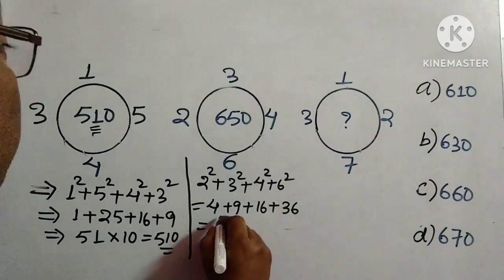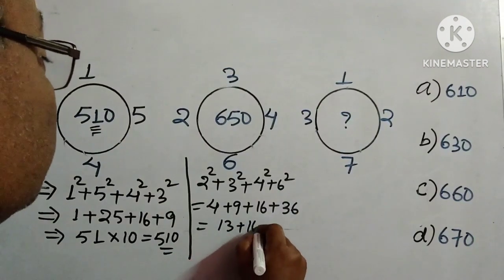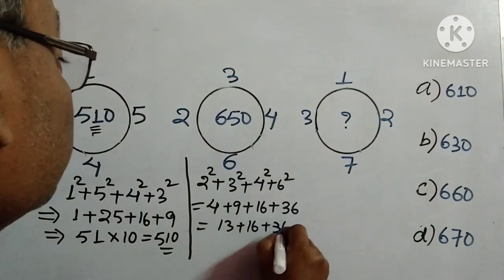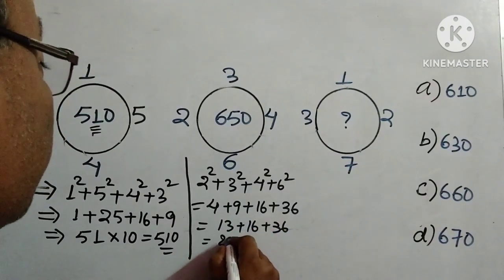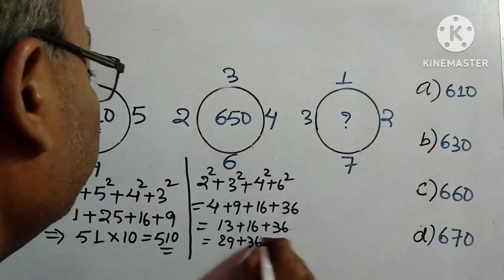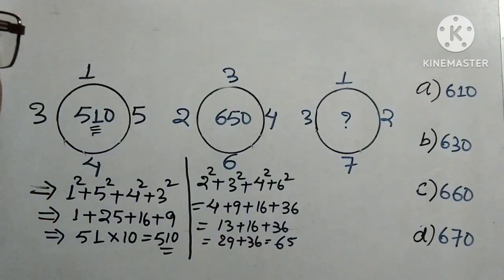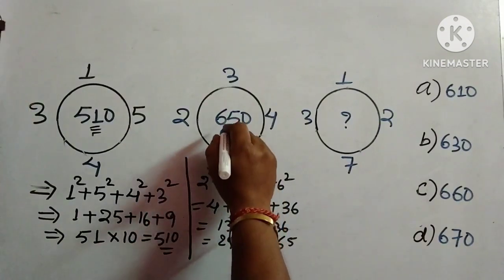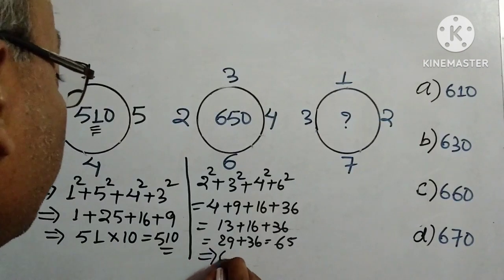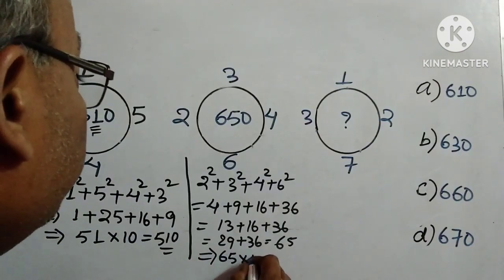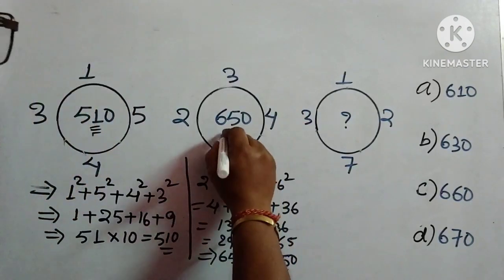This comes to 13 + 16 + 36. Now this is 29 + 36, which equals 65. Again see, 65 and 650. So we have to multiply 65 by 10, and we are getting 650, which is given. That means our process is correct.